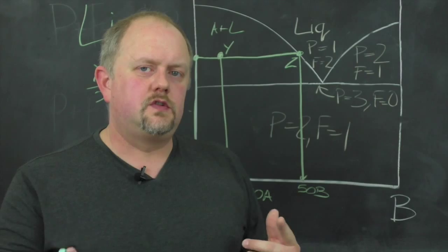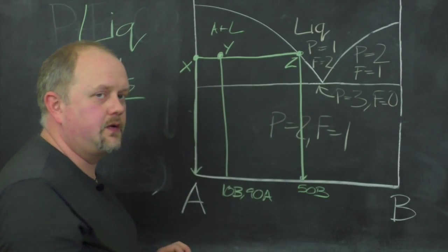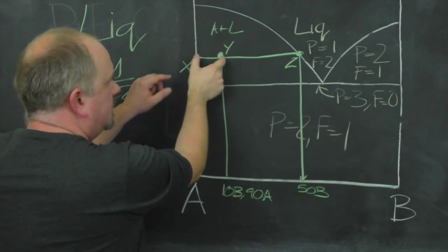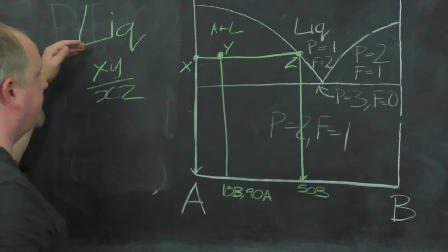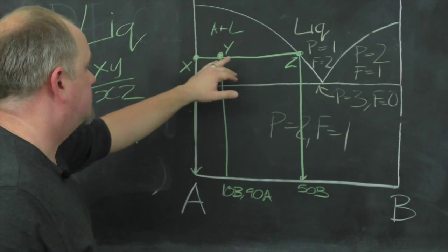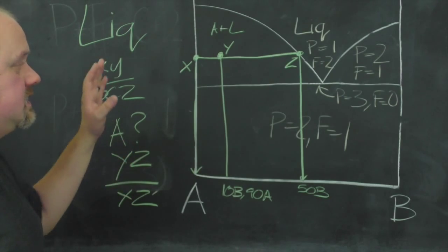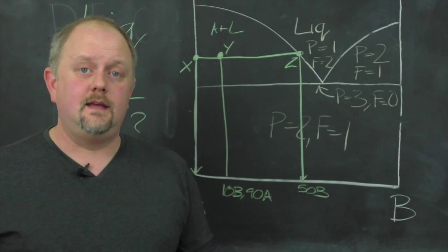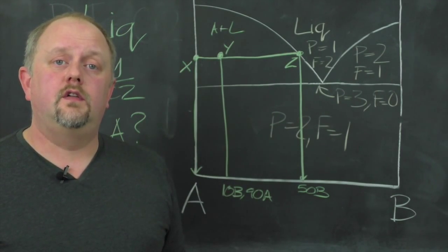I always find this a bit counterintuitive when I first learned this because you kind of imagine, you want to know about the liquid, you're going to go towards the liquid. But actually, it's the other way around. So if you want to know how much liquid you've got, you measure this distance over the whole distance. So you take the ratio x, y to x, z. And that gives you the fraction of liquid. If we want to know how much A we have, we do the opposite. So it's y, z over x, z. And that gives us the relative proportions of the liquid and the crystalline phase A in our system at this data point. You can just measure these off using rulers and you'll get a relatively accurate value.